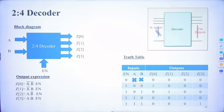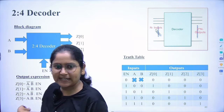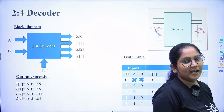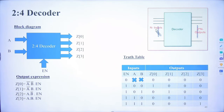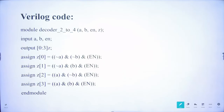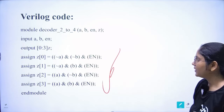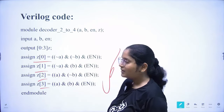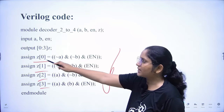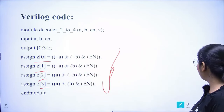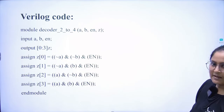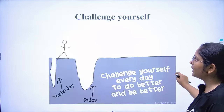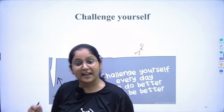For the 2-to-4 decoder, we have four outputs and an enable input — it works only when enable is active. We directly use four boolean expressions, assigning z0, z1, z2, z3. For example, when a and b are both zero and enable is active, z0 is assigned. Inputs are a, b, and enable; outputs are z0–z3.